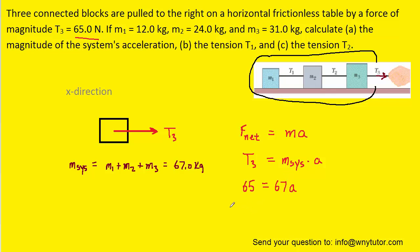And when we solve for a, we get approximately 0.970 meters per second squared as the acceleration of the system. So part a is solved.